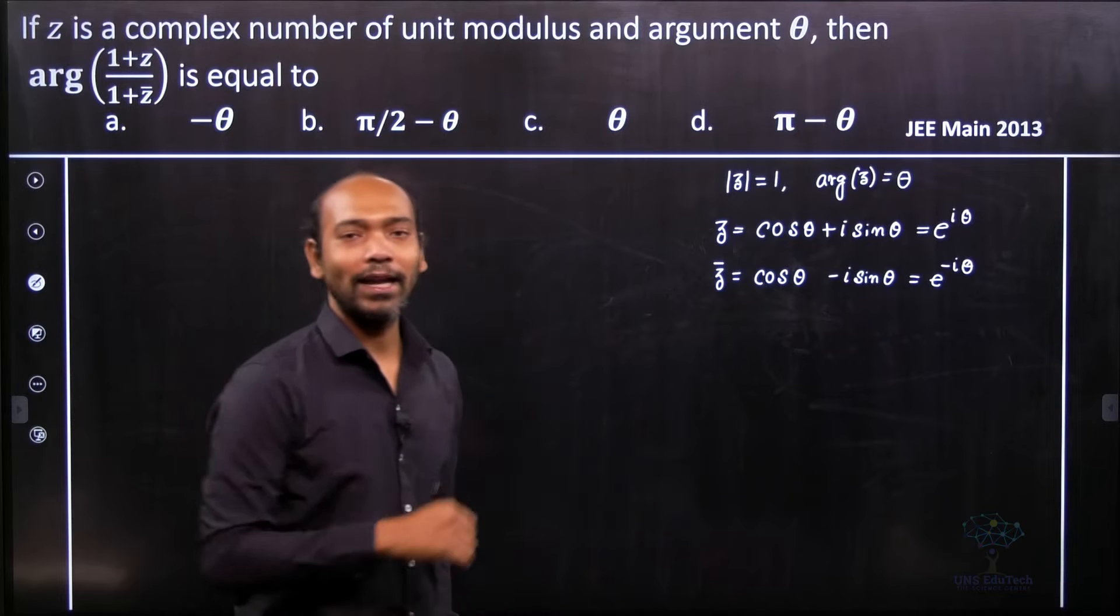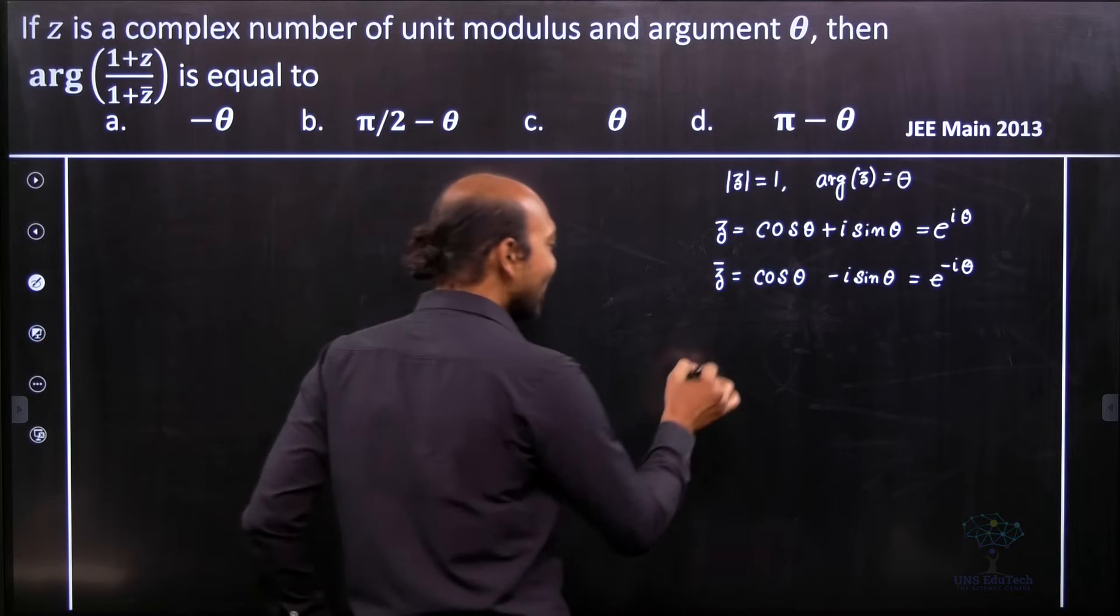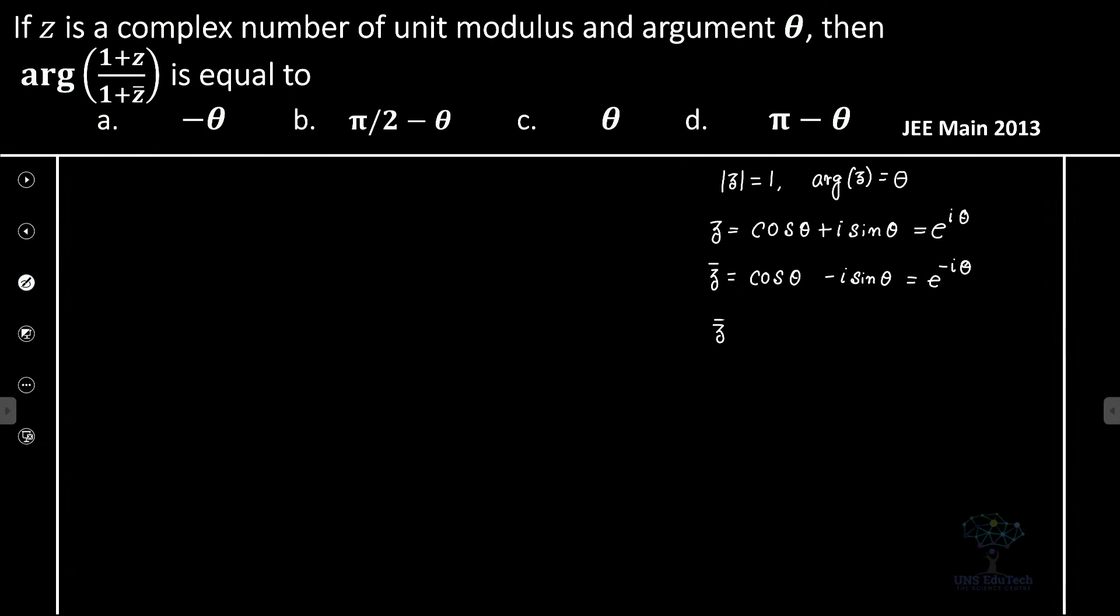So therefore, for this particular problem, z bar is definitely equal to 1 by z. So that's the important relation we have found out here.